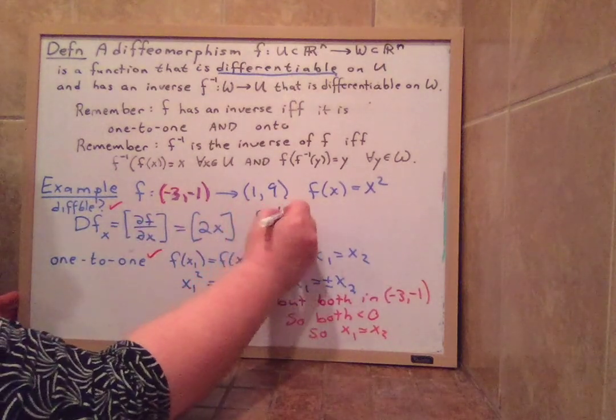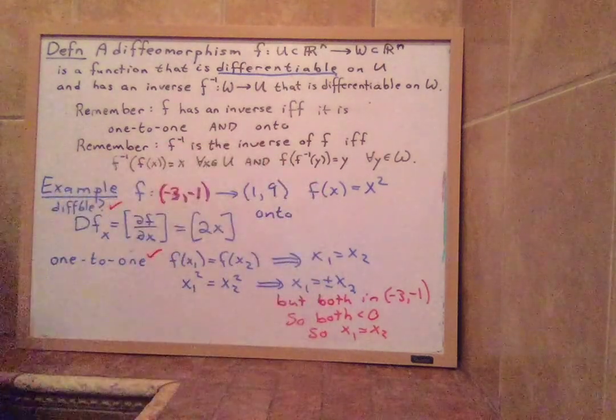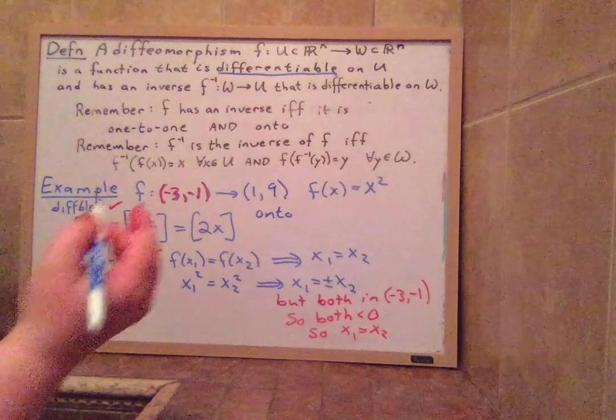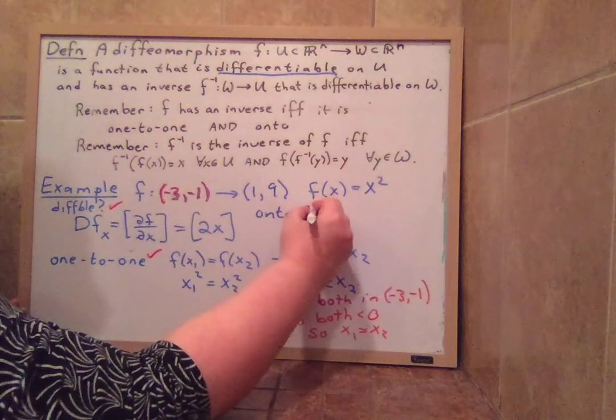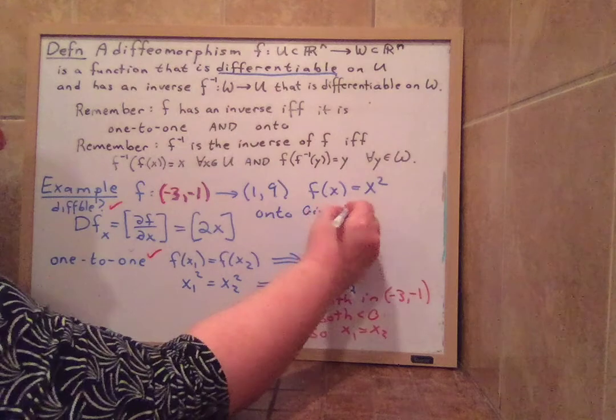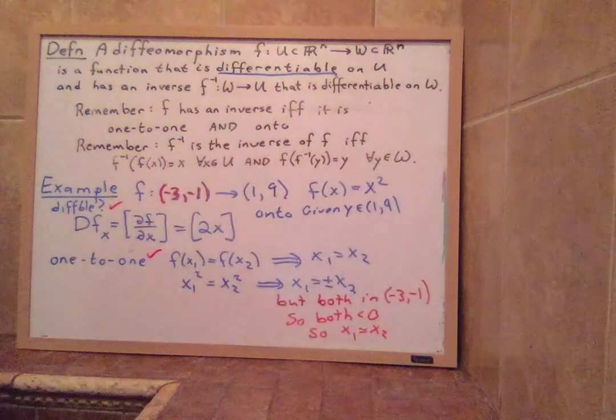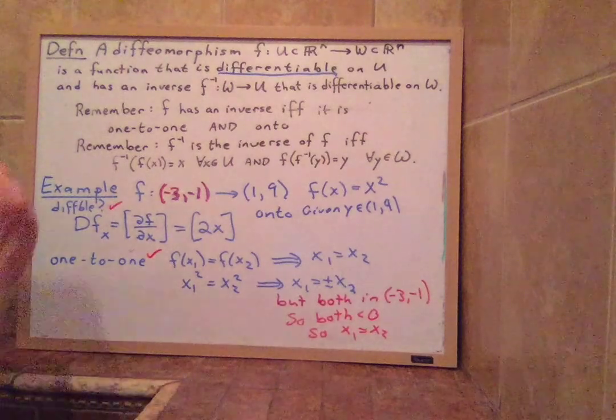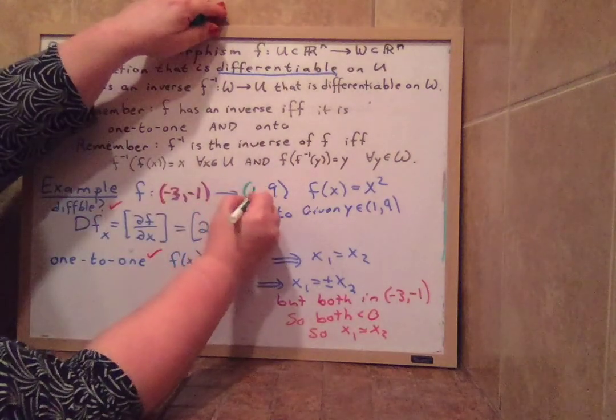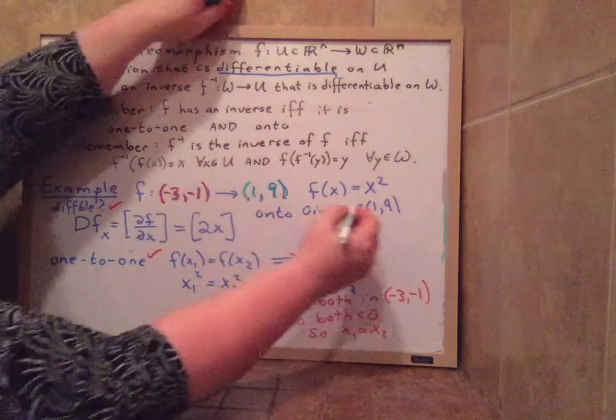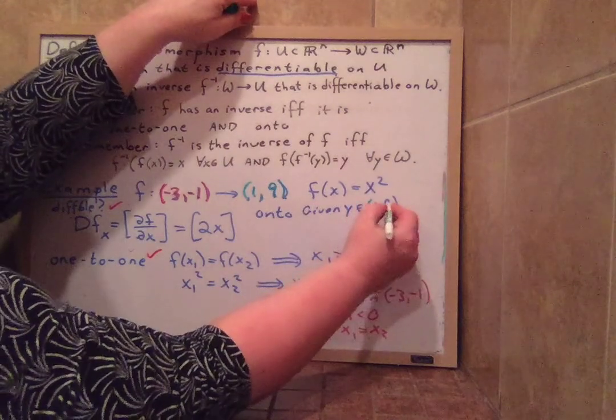On to? So onto says, given any y, given y in one to nine, in our, this is our set W, one to nine. So that's where we're looking for our y's.